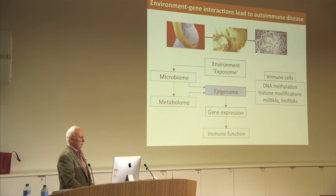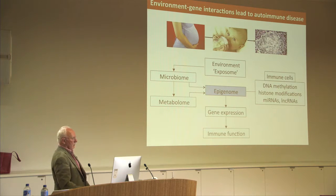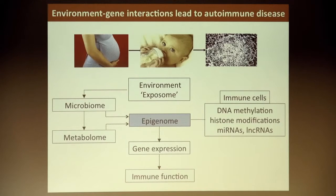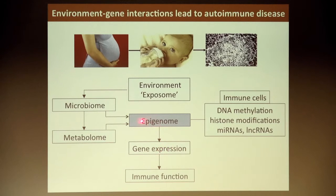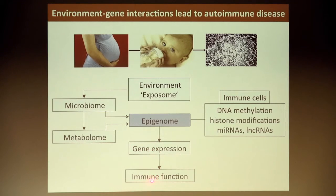Finally, my last approach now to autoimmune disease — at least type 1 diabetes — is to try to link up the environment, which we call the exposome, with gene expression by the epigenome. These are all the chemical changes that occur on DNA induced by the environment that alter gene expression and therefore may alter immune function and lead to immune diseases. Thank you.